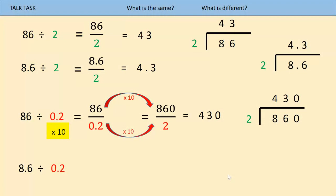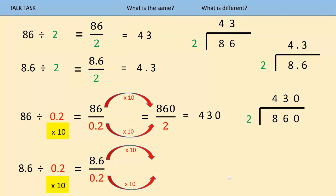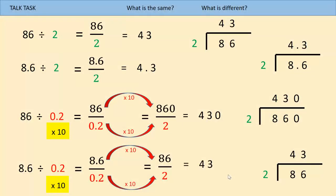Now let's look at 8.6 divided by 0.2. Again, I have that 0.2 that I want to make into an integer, so again I need to multiply by 10. Writing it as a fraction: 8.6 divided by 0.2 — I multiply the denominator by 10, which gives me 2, and I multiply the numerator: 8.6 times 10 gives me 86. So my calculation becomes 86 divided by 2. I've already calculated that — the answer is 43. So 86 divided by 2 is exactly the same calculation as 8.6 divided by 0.2.